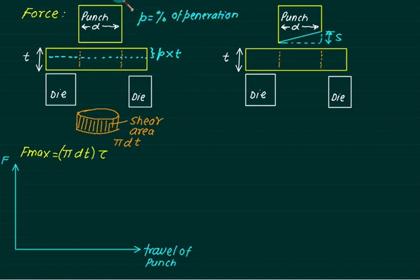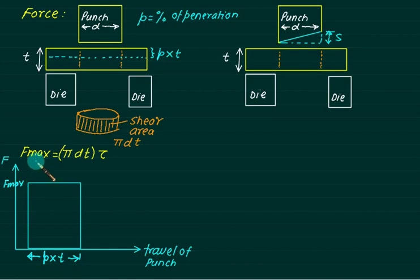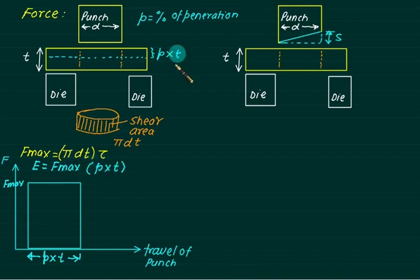Under ideal conditions, the force required is maximum force during punch travel p×t. The area under the force-displacement graph is the work done, or energy: Energy = F_max × p × t. The penetration p is typically 10–50%, depending on material — one-third for mild steel, full penetration for soft materials.